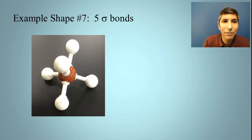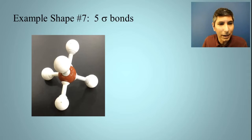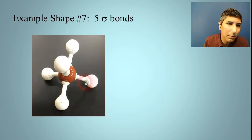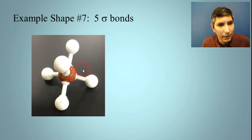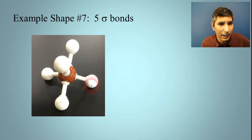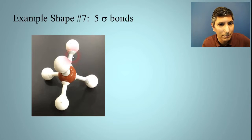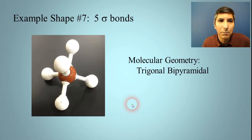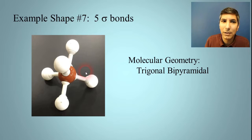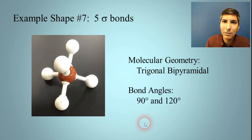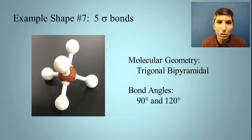Let's try a case with five sigma bonds. Looking at the molecular model, you might notice it actually has two different bond angles. There's a trigonal part — a triangle lying on its side — and also a pyramidal part. We call this trigonal bipyramidal because it has that triangular facet plus two pyramids, one on top and one on the bottom. The bond angles are 90 degrees and 120 degrees, so two bond angles on this one.